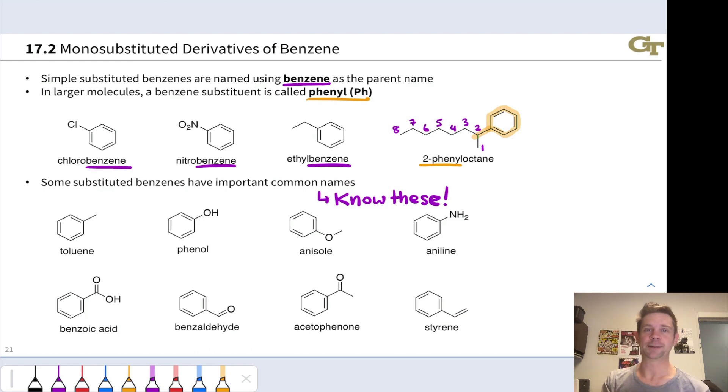Some benzenes do have important common names, and you're going to hear me use these names on a regular basis, so they're worth learning. And you'll get familiar with them as you see these compounds over and over again. We've already encountered toluene. Hydroxybenzene is known as phenol. Methoxybenzene is anisole. Aminobenzene, aniline. Carboxybenzene or benzene carboxylic acid is known as benzoic acid. We also have benzaldehyde with an aldehyde group linked to the benzene ring. Acetophenone is another name for phenylmethylketone. And then styrene, which is essentially ethenyl or vinyl benzene is commonly known as styrene. So you'll see these names used throughout our discussions of aromatic compounds throughout the course.